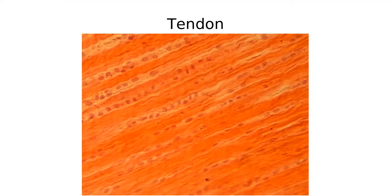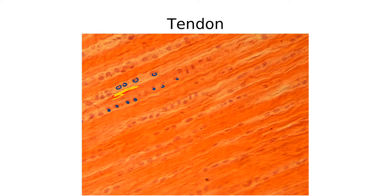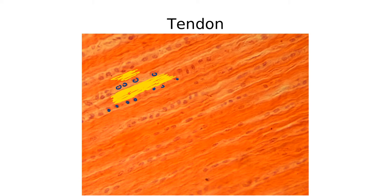Looking at this tendon slide, you can see rows of fibroblast nuclei — very typical for dense regular connective tissue. The fact that they're in nice neat rows means there was no space for them within the collagen bundles themselves. There was no room for any cells to squeeze in because the bundles of collagen are so dense. This is why it's called a dense connective tissue — very thick fibers of collagen, with nuclei arranged in rows in between. Thanks for your time — we'll see you next video.